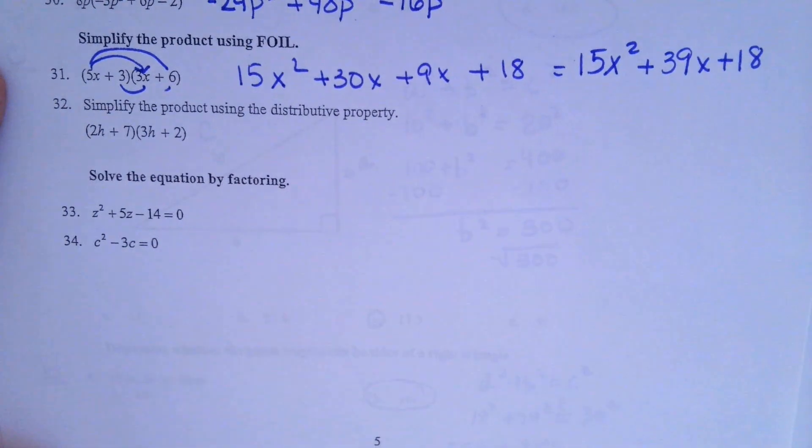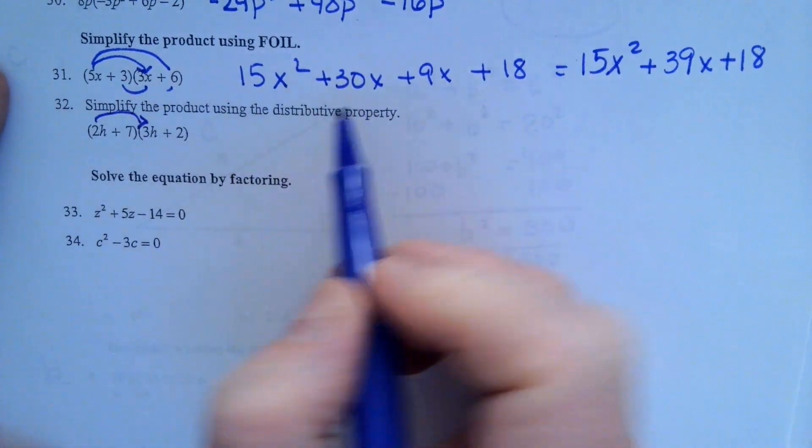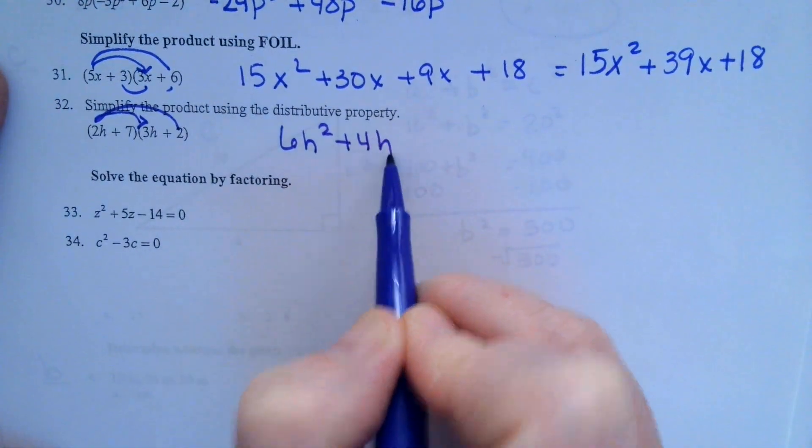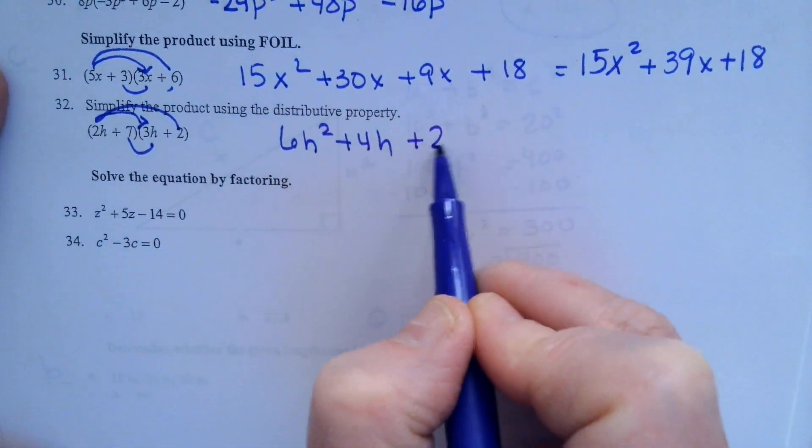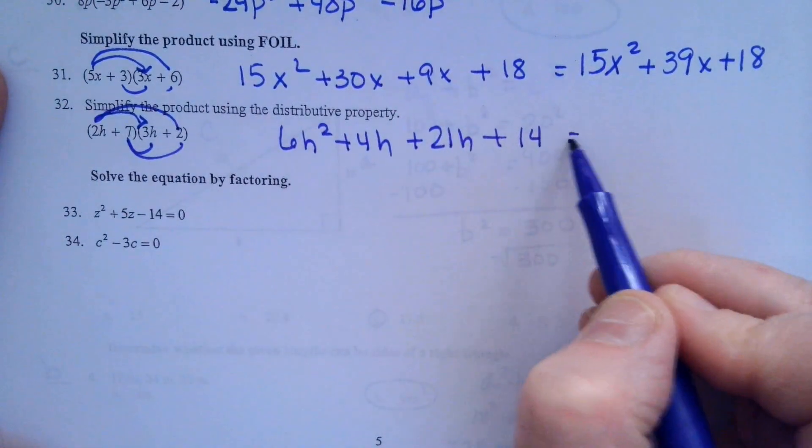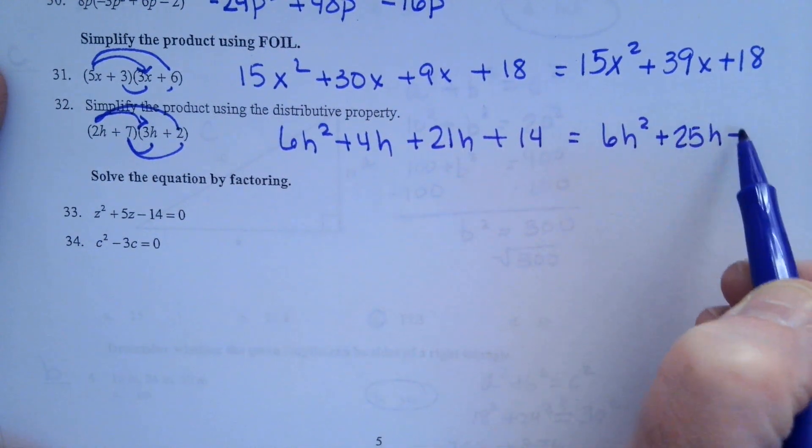Number 32. Simplify the product using the distributive property. 6h squared plus 4h plus 21h plus 14. The two in the middle are going to combine. And that's going to be 25h plus 14.